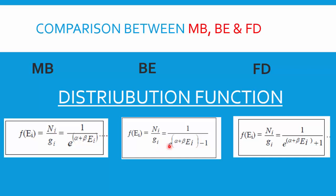For Bose-Einstein statistics, the distribution function is 1 / (e^(α + βEᵢ) − 1), and for Fermi-Dirac statistics it is 1 / (e^(α + βEᵢ) + 1). These three different formulas govern how particles from each of the three statistics are distributed across energy levels based on temperature.